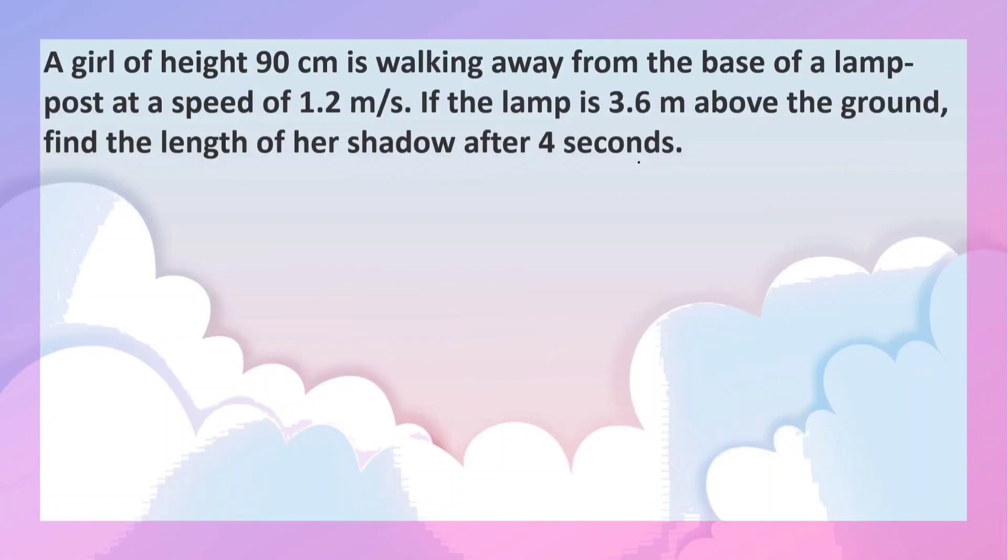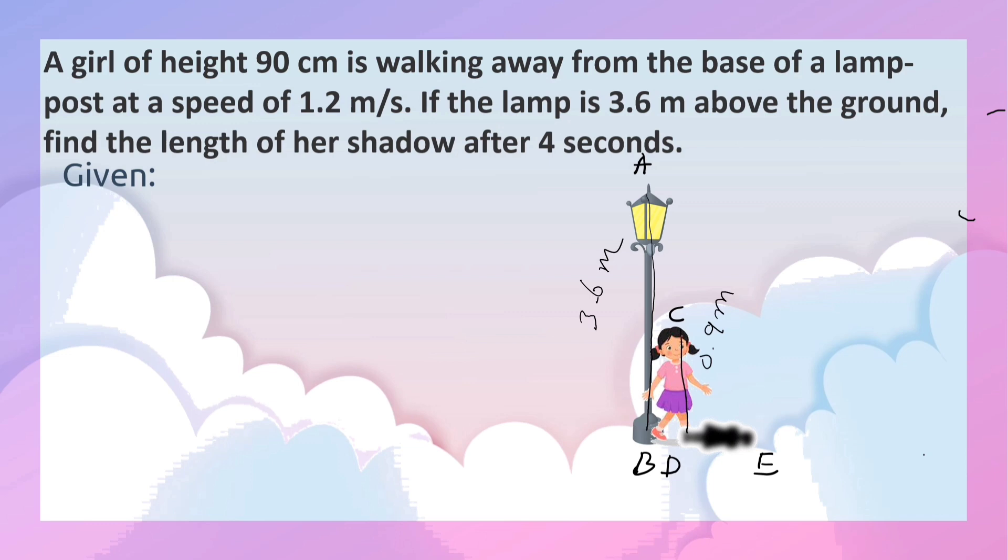A girl of height 90 cm is walking away from the base of a lamppost. Let AB be the lamppost, and its height is 3.6 meters. Let CD be the girl. Her height is 90 cm, which means 0.9 meters. DE is the length of the shadow.